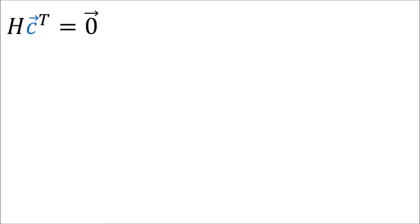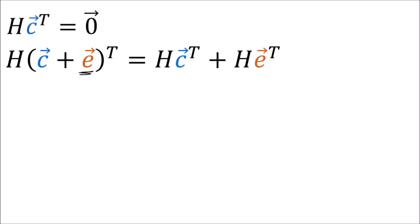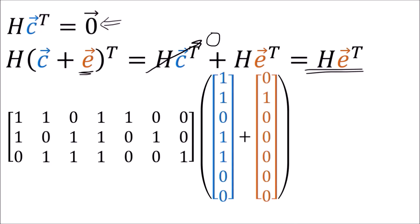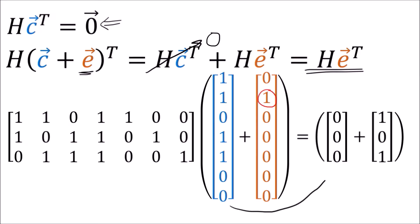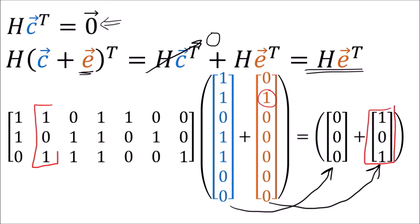The interesting thing about the parity check matrix is that if we take this valid codeword and add an error vector, we distribute the H matrix. When we distribute the H matrix, we find that the part with the valid codeword goes to 0 by definition, and so we're left with only the error term. If we take the codeword from before and add an error vector which flips the second bit, the codeword term goes to the 0 vector, and the error term projects out the second column of the parity check matrix, which gives us a vector called the syndrome vector.